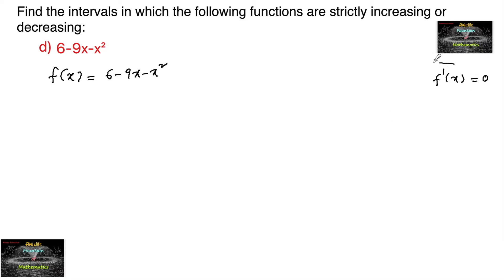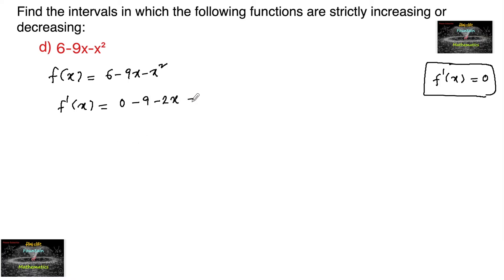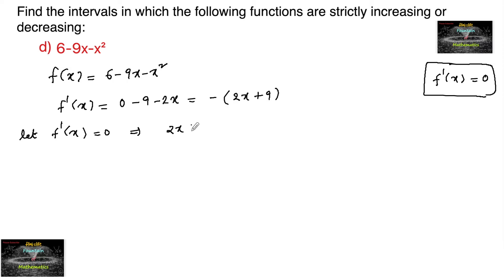For the values where f'(x) = 0, we can decide whether it is increasing or decreasing. So let's differentiate: f'(x) = 0 - 9 - 2x, or we can write it as minus of (2x + 9). Now we need to find the value of x for which f'(x) = 0. So let f'(x) = 0, which implies minus of (2x + 9) = 0.